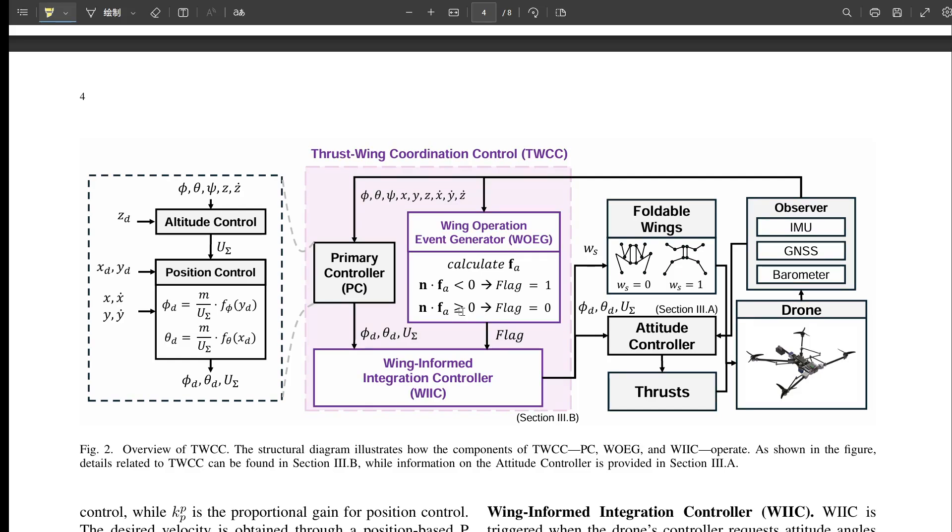Exactly. The WOEG is like the wing strategist. It's constantly looking ahead, predicting, if we deployed the wings now, would it actually help achieve the movement the PC wants? How does it figure that out? It compares the drone's current orientation, its normal vector, with the aerodynamic force it estimates the wings would produce if deployed.